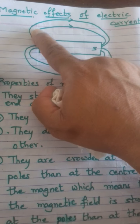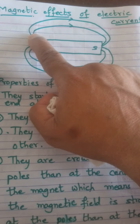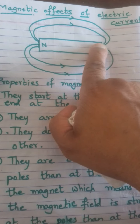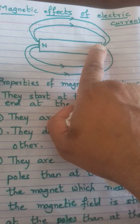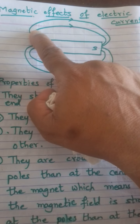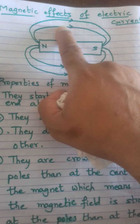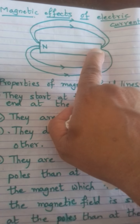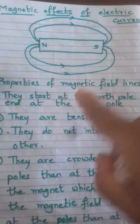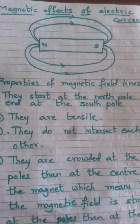The magnetic field lines around the bar magnet start at the north pole and end at the south pole. They start at the north pole, move around, and end at the south pole. This is the first property of the magnetic field lines.